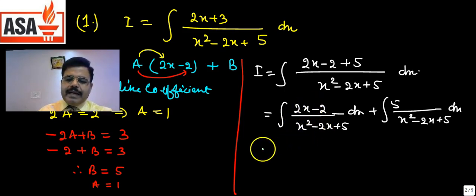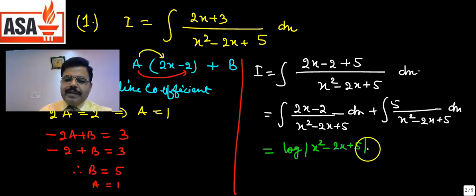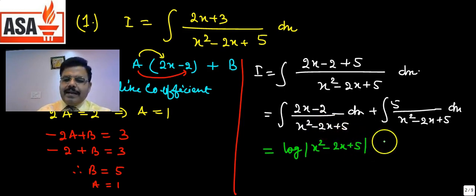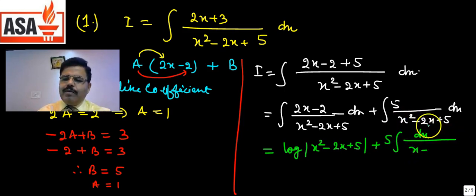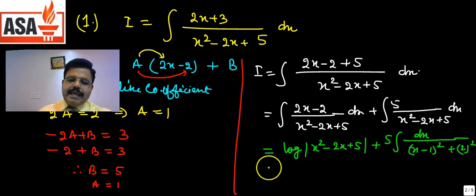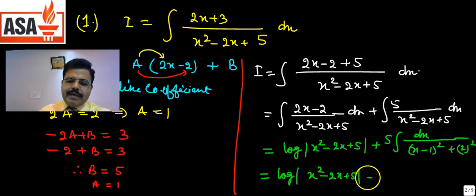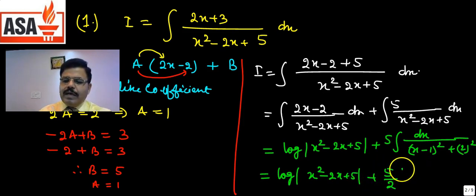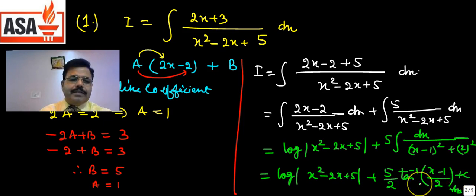ऊपर में अगर नीचे वाले का derivative हो तो हम log of नीचे वाला लिख सकते हैं — यानि log(x² - 2x + 5). और दूसरे part में 5 बाहर आ गया, इसको perfect square बना सकते हैं। x² + a² के pattern में, 1/a tan⁻¹(x/a) का formula use होगा। तो answer होगा: log(x² - 2x + 5) + (5/2) tan⁻¹((x - 1)/2) + C.